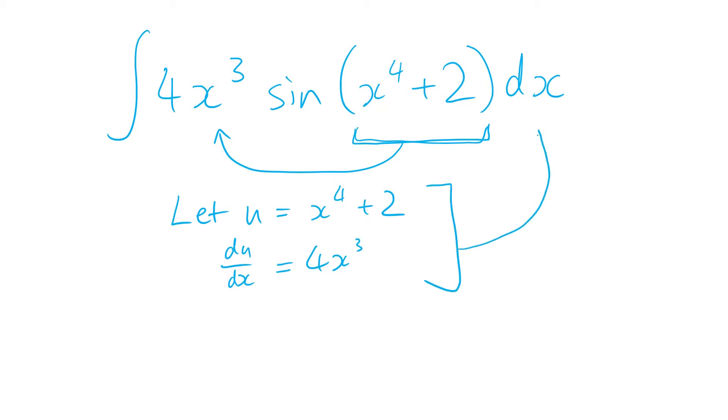We want to substitute these back into the original equation. So doing that, that will give us sine of u du dx dx. Now we can effectively cancel the dx's and you're left with a much nicer integral.